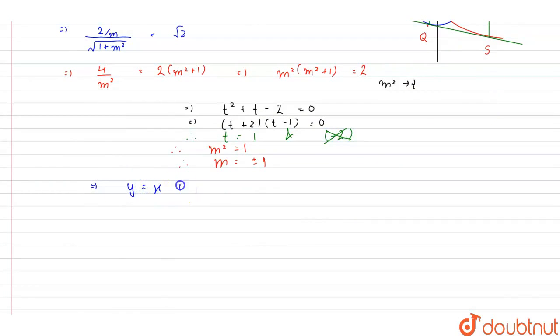So we get the equation of tangent as y = x + 2 and y = -x - 2. Now if we solve both these equations with the parabola y² = 8x and the circle x² + y² = 2